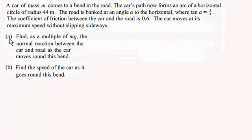Hi there, now here we have a typical question of a car going round a bend. What we've got is a car of mass m comes to a bend in the road, and the car's path now forms an arc of a horizontal circle of radius 44 meters. And the road is banked at an angle alpha to the horizontal, where tan alpha equals 3 quarters.